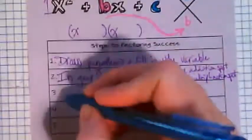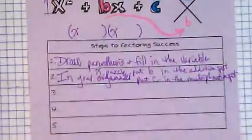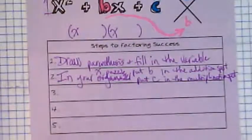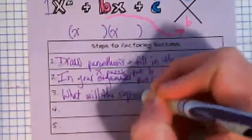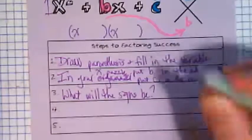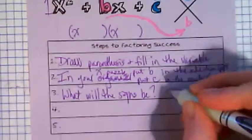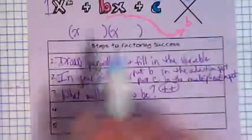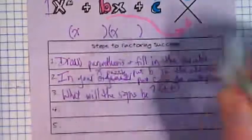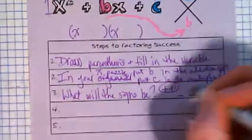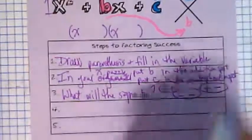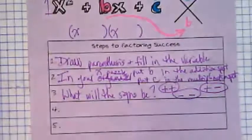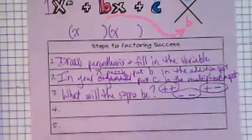Step three is a question. What will the signs be? So the question is, are we going to have two positives in here? Are we going to have two negatives? Or are we going to have a negative and a positive? And from the warm-up work you guys did last week, that should start becoming apparent as we work through some examples today.